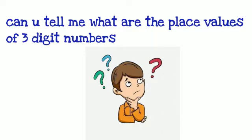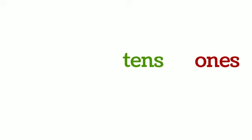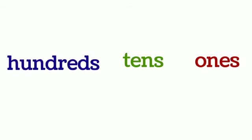So place values — we will add one more place value and explore it. So 1s, 10s — and now there is one more place value, and that is hundreds. So the place values of 3 digit numbers are 1s, 10s, and 100s. Okay.